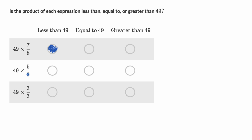49 times 5 halves. Well, 5 halves is greater than one. Remember, 2 halves would be equal to one, so 5 halves is greater than one. So if I'm multiplying 49 by a value that is greater than one, I'm going to get a value that is greater than 49.